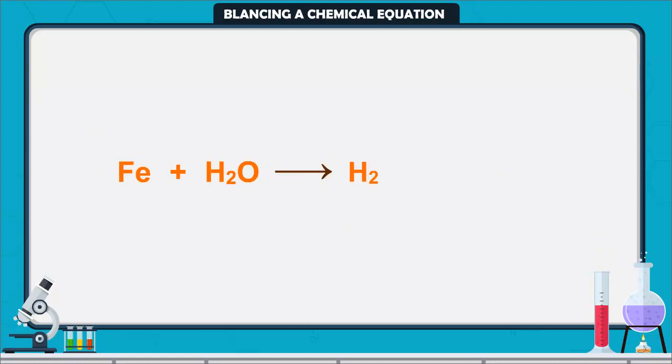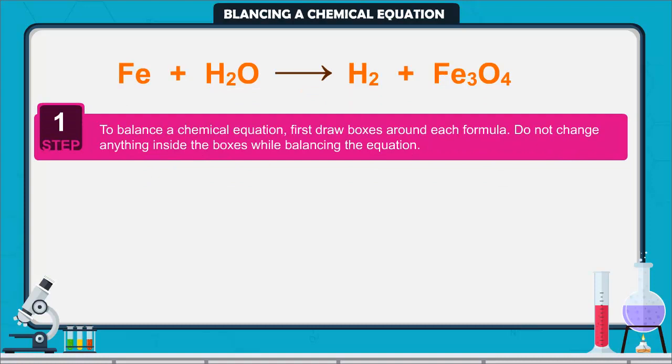Let us try to balance the following chemical equation step by step. Step 1. To balance a chemical equation, first draw boxes around each formula. Do not change anything inside the boxes while balancing the equation.